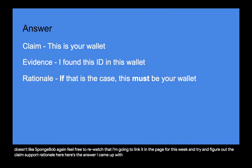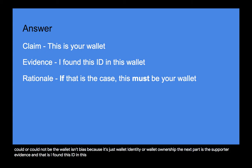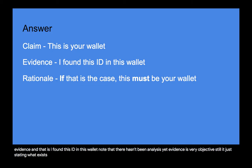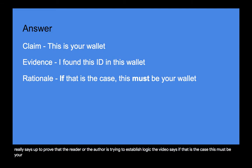Here's the answer I came up with. The claim is: this is your wallet. It's a debatable statement — it could or could not be the wallet — and it isn't biased, just a statement of wallet ownership. The support is: I found this ID in this wallet. Note there's no analysis yet; evidence is objective, just stating what exists. Then comes the rationale: 'if that is the case, this must be your wallet.' The language signals that the author is establishing logic — it explains how having an ID in a wallet proves Patrick owns the wallet.